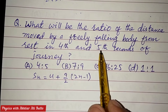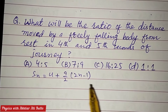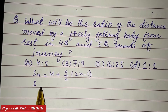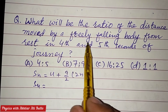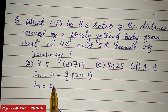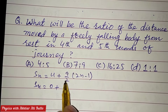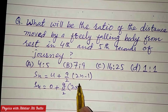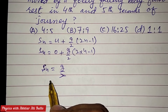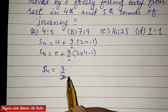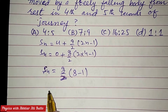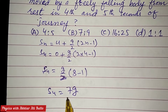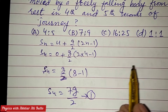To calculate the distance in the fourth second: the body is at rest, so initial velocity u is 0, and a is equal to g. Therefore, distance in fourth second equals g upon 2 into (2 × 4 − 1), which equals g upon 2 into 7, giving 7g upon 2. This is equation number 1.